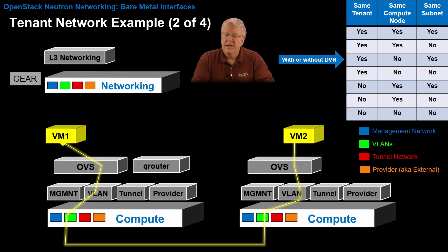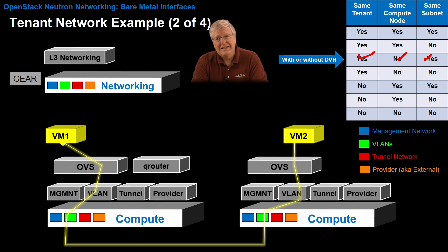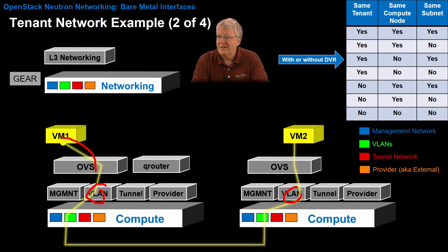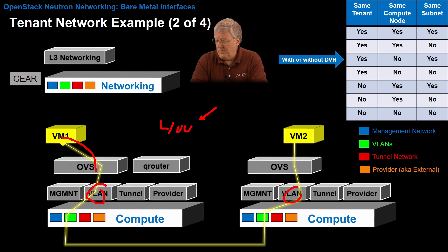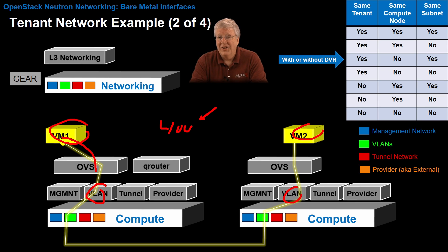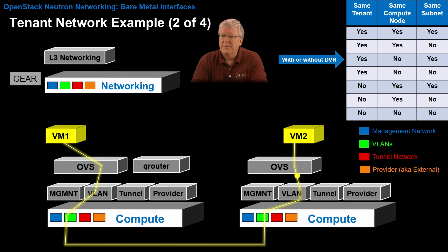What if we have an example where it is the same tenant but a different compute node, and it's still the same subnet? In that particular case, as long as OpenStack knows the name of this VLAN bridge — and it does because we told it — OpenStack is going to select from a pool of VLANs. Let's say we create a pool of 400 VLANs. OpenStack is free to choose whichever one it wants from that pool, and it would use that particular VLAN to network everything in this yellow VLAN. The traffic is simply tagged with the VLAN tag and remains between the two.